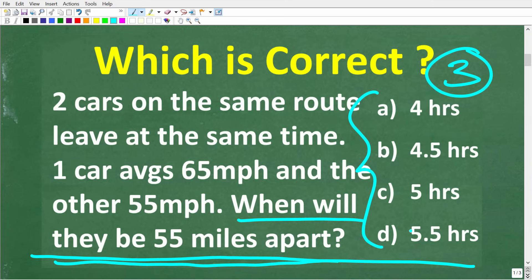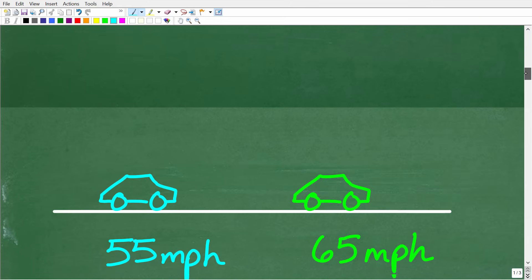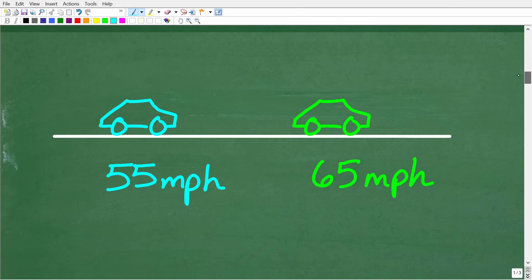All right, now the next thing that you want to do in any math word problem, if you can, is to visualize it or model it. Now sometimes it's difficult to do this with some problems, but in this case we have two cars, we can make ourselves a nice little sketch to kind of visualize what's going on.